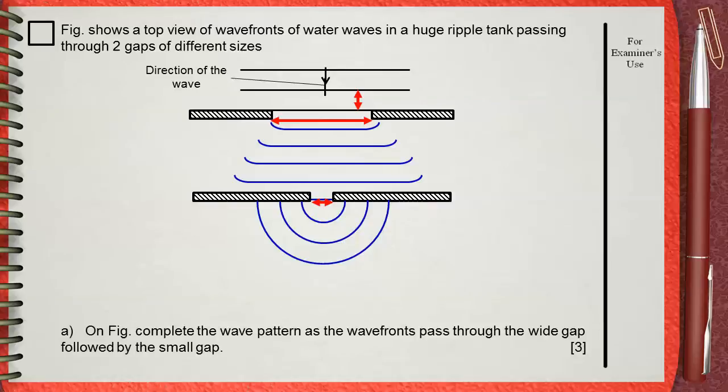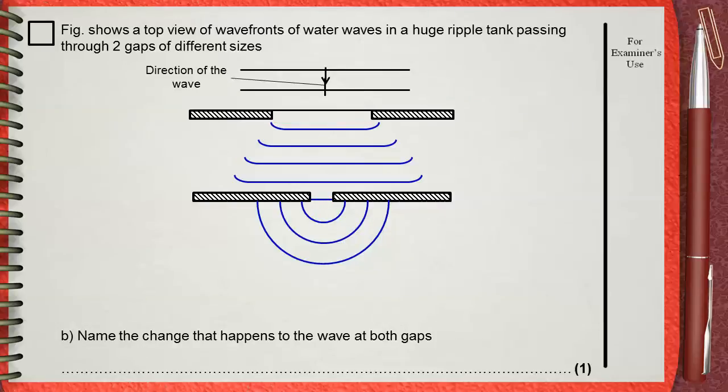Question B is an easy one. Name the change that happens to the waves at both gaps. This is simply diffraction.